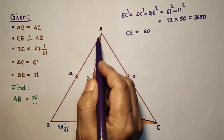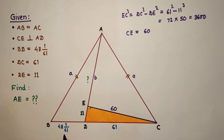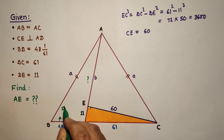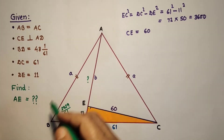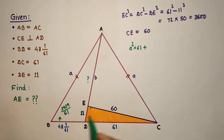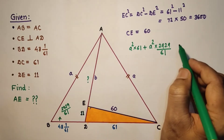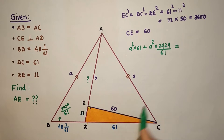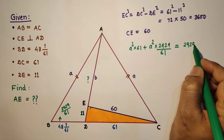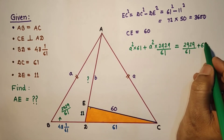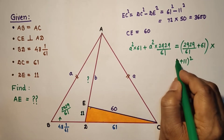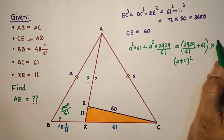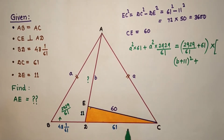Applying Stewart's theorem: a² × 61 + a² × (2929/61) equals BC × [AD² + product of the two parts]. Here BC = 61 + 2929/61 and AD = b + 11. So the right-hand side becomes (2929/61 + 61) × [(b + 11)² + 2929/61 × 61].